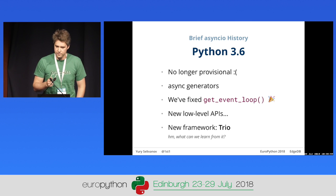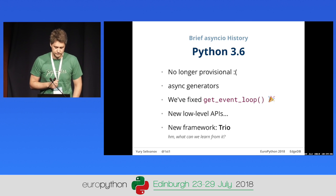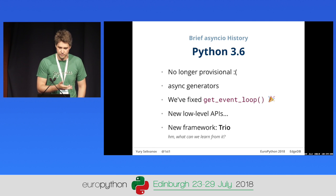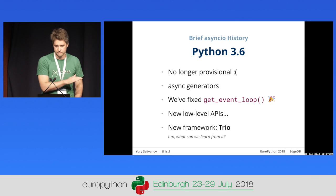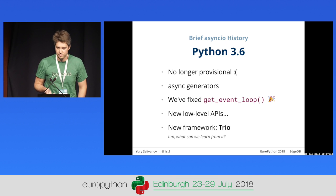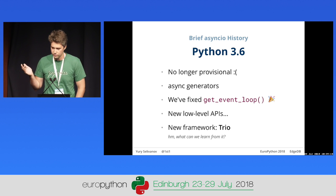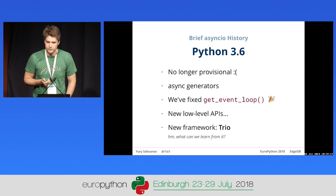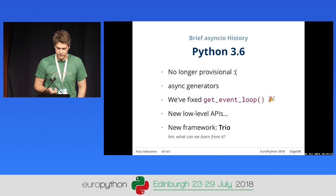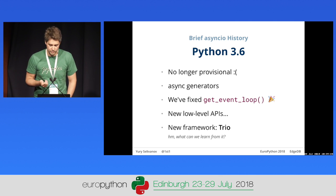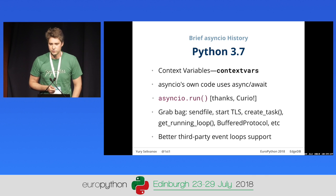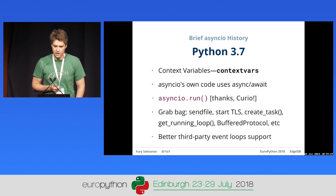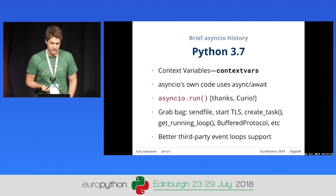Around that time, Nathaniel Smith created Trio — just like Curio, developed basically from scratch, also an async/await library with no callbacks or protocols. But Nathaniel focused more on usability and predictability of async/await code. We'll talk about Trio a bit later. And Python 3.7, which is a couple of months old now — the headline feature for AsyncIO is context variables, which we'll also cover shortly.